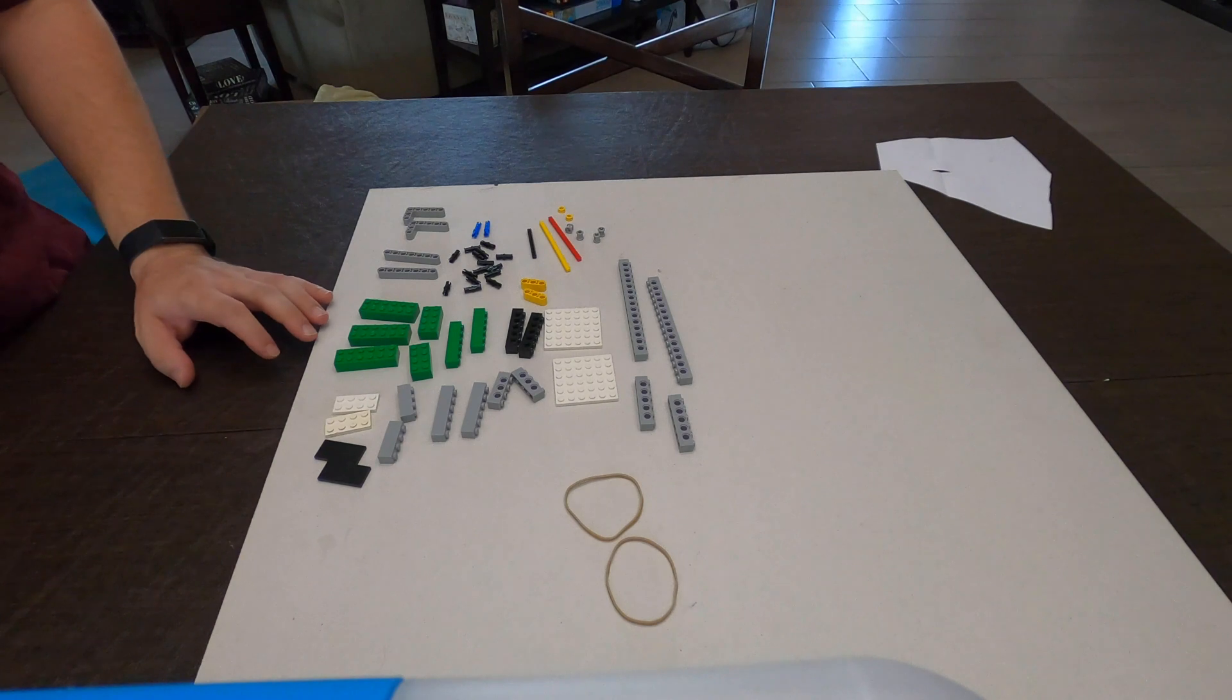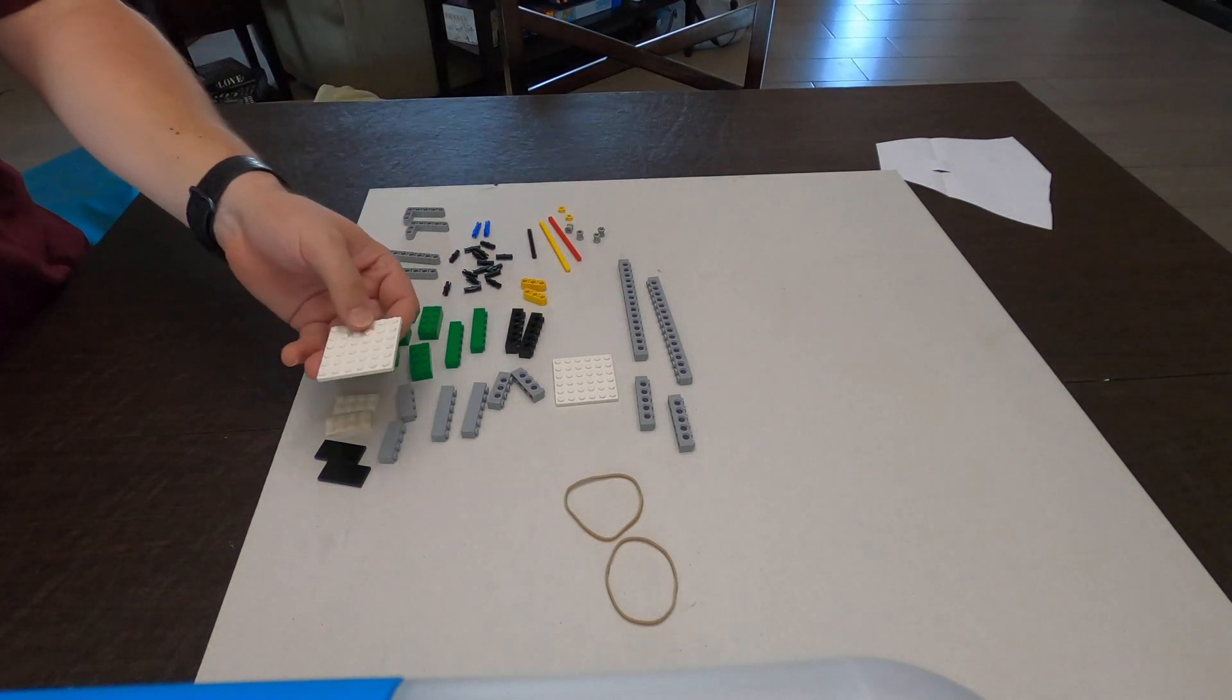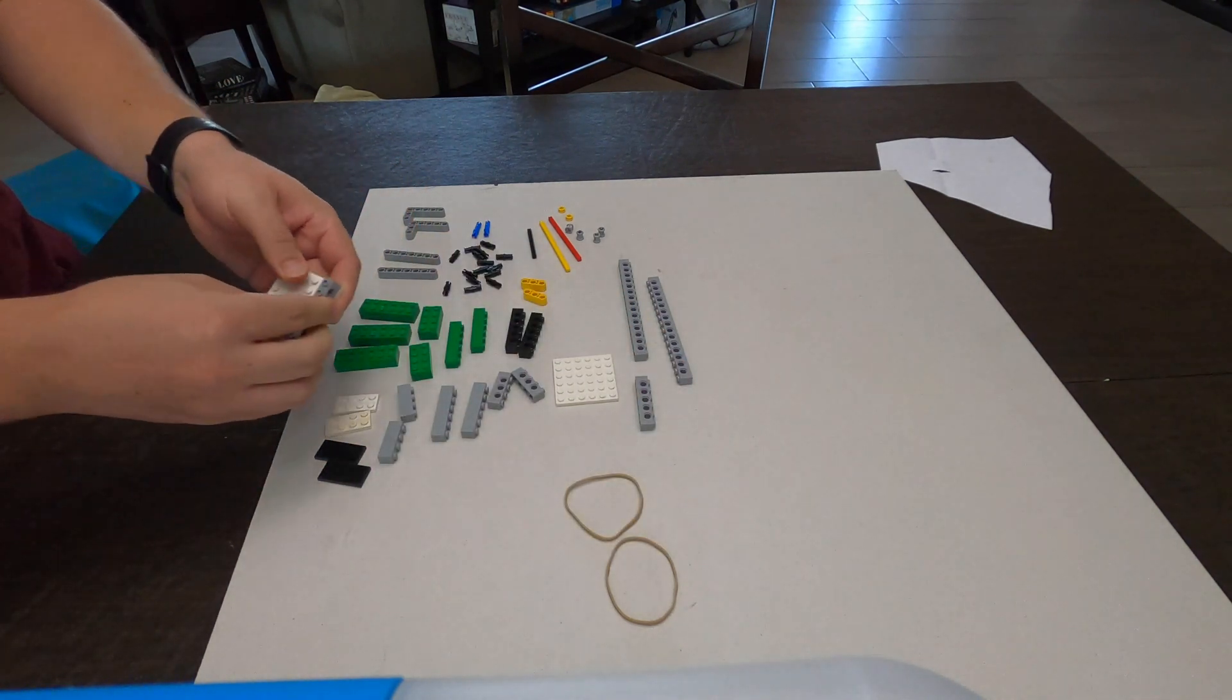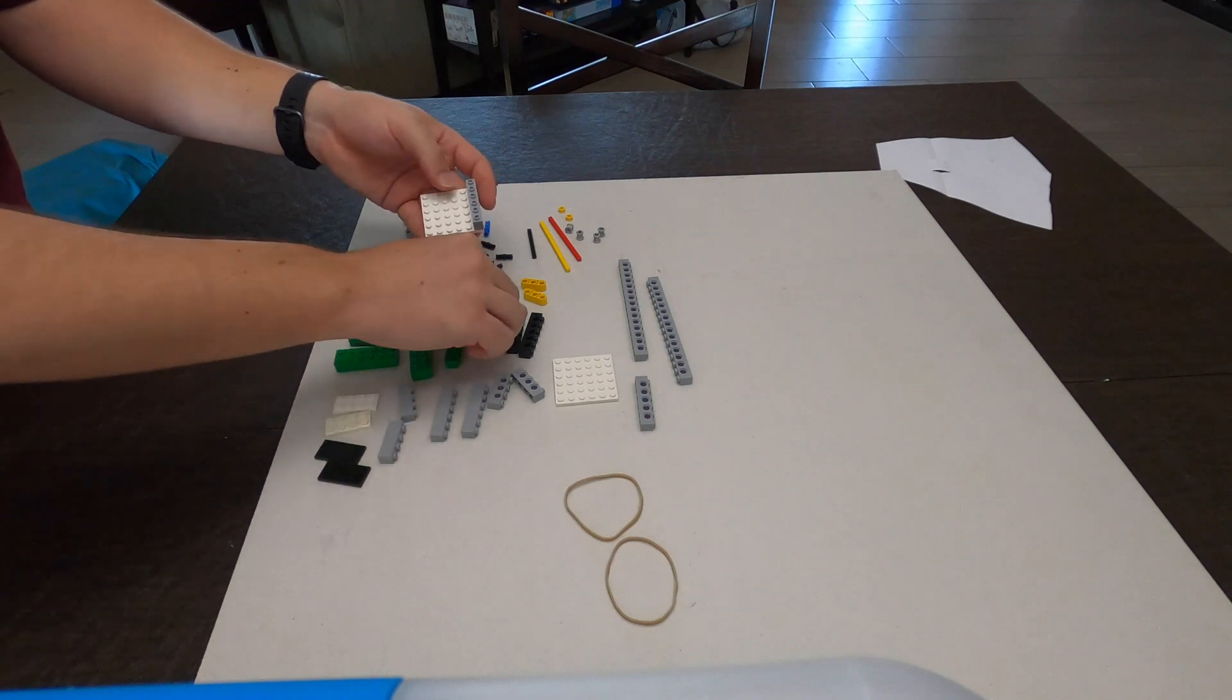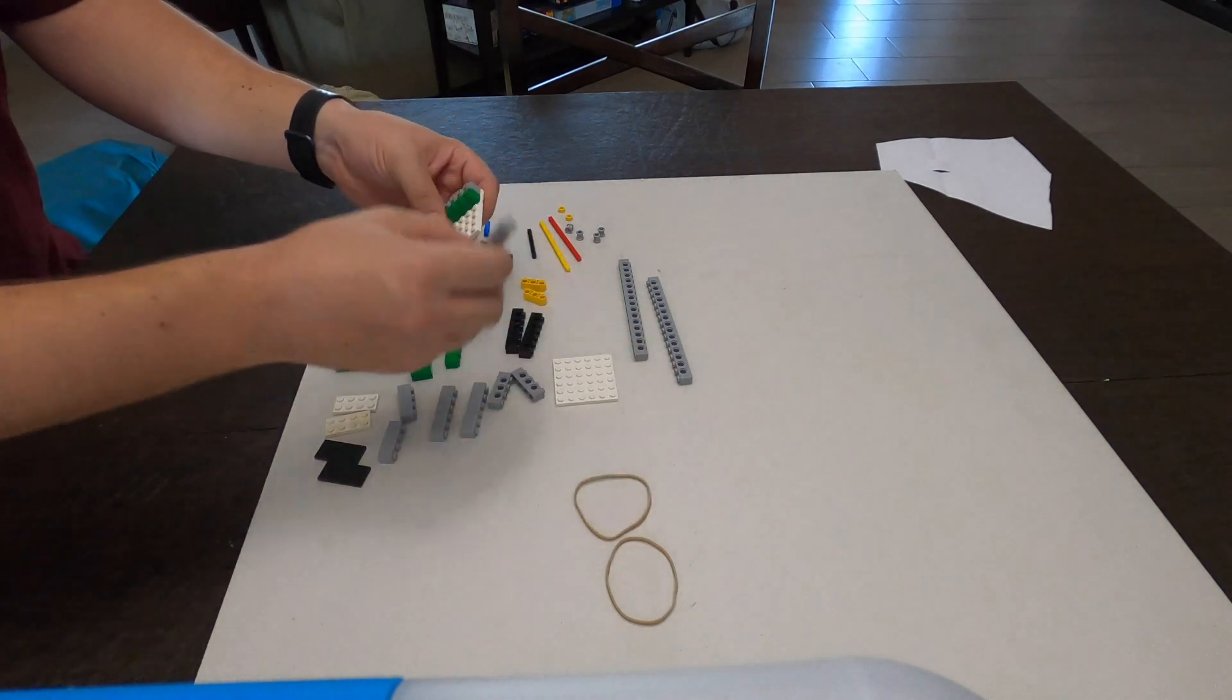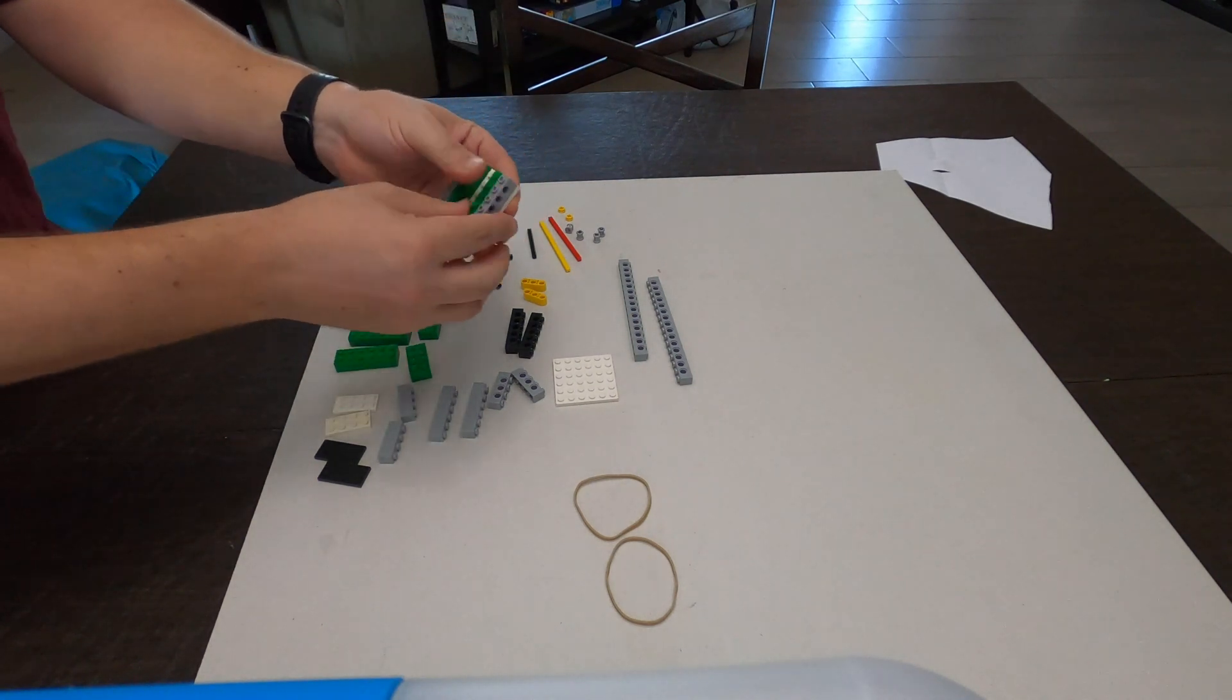We're going to build the catapult. This is the first version that uses the rubber bands. We are going to start with a 6x6 baseplate and then again the colors and the building instructions may not match the colors that you have. It's okay.